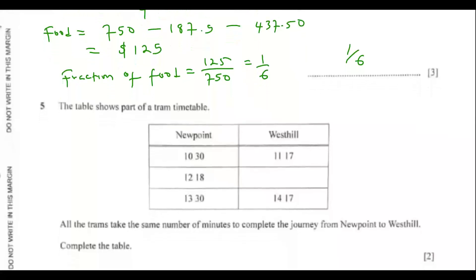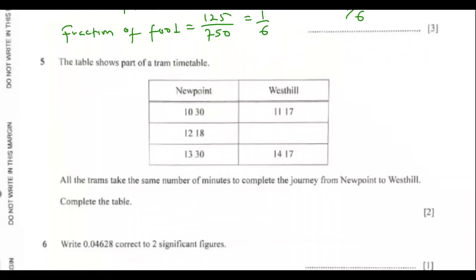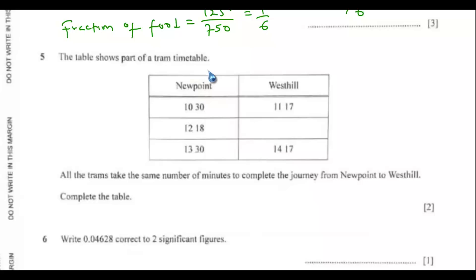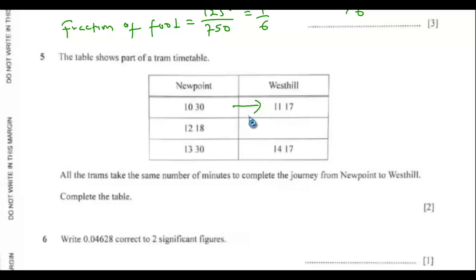Question 5. The table shows part of a tram timetable. New Point and West Hill are the two stops. All the trams take the same number of minutes to complete the journey from New Point to West Hill. Complete the table.